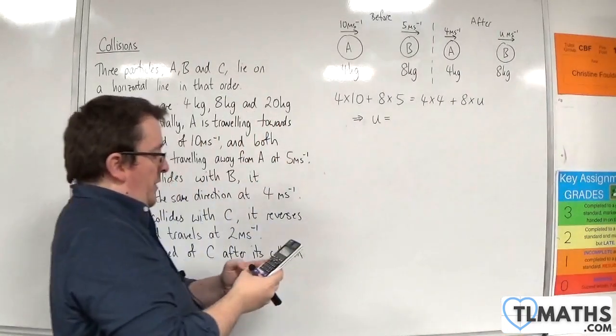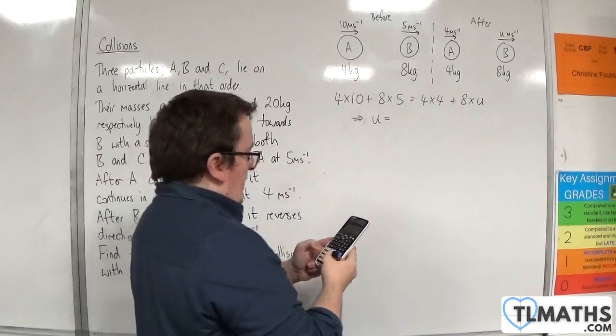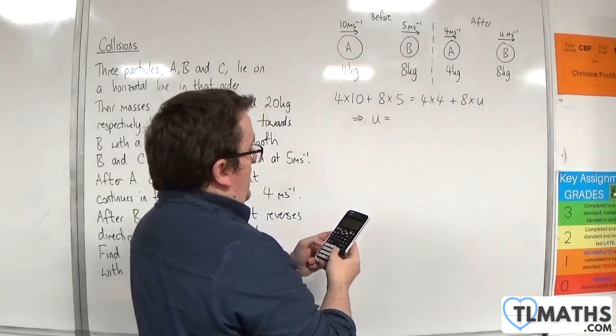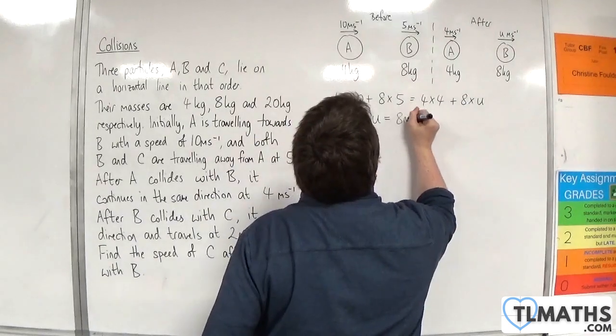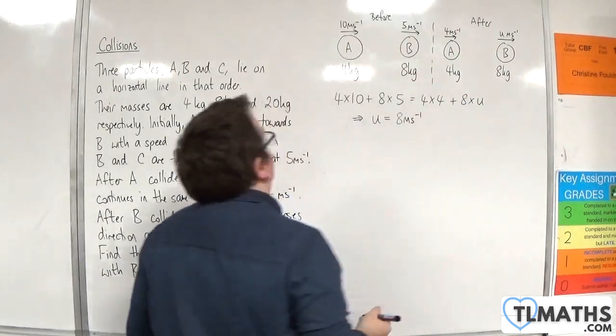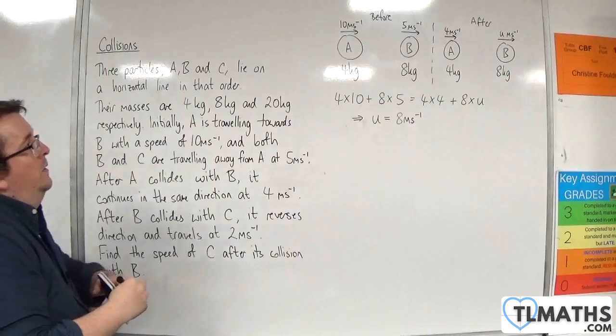So 4 times 10 plus 8 times 5 take away 4 times 4 and then divide that by 8. We get that U has to be 8 metres per second.